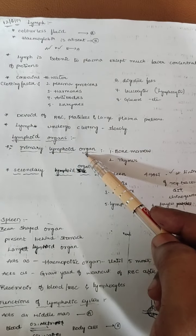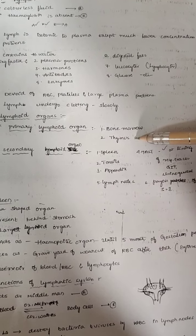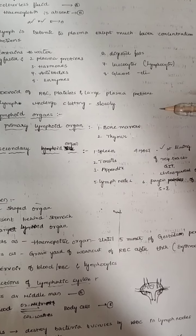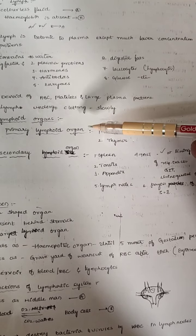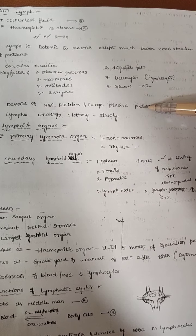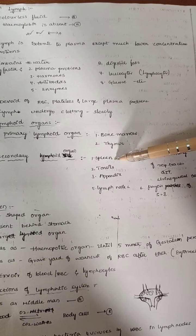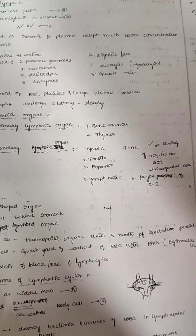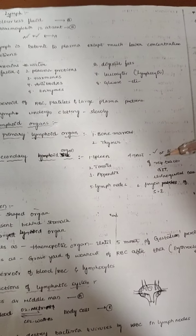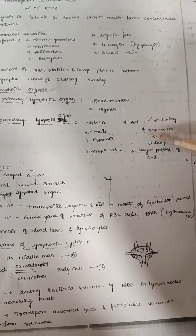Lymphoid organs are of two types: primary lymphoid organs and secondary lymphoid organs. Primary lymphoid organs are where lymphocytes are formed and matured — these are the bone marrow and thymus gland. Secondary lymphoid organs are where lymphocytes attack the antigen, the foreign particles. Secondary lymphoid organs include the spleen, tonsils, appendix, lymph nodes, and MALT (mucus-associated lymphoid tissue), which is mainly present in the respiratory tract regions.